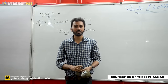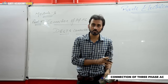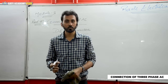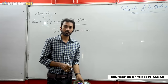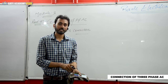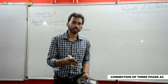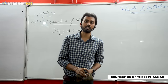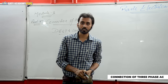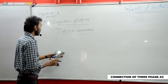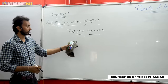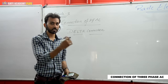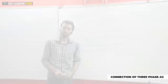In this particular video, we will study line and phase quantities in a delta connected system — which are the line and phase quantities in delta, how to express the connection, and also the relation between line and phase quantities. We will see what is line current and phase current, and what is line voltage and phase voltage when a balanced delta connection is applied in a three-phase system.